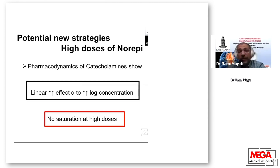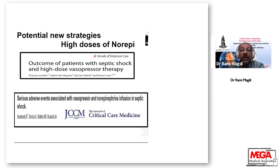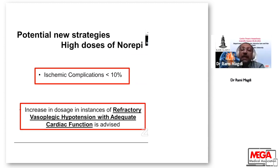Among potential new strategies, high-dose norepinephrine is based on catecholamine pharmacodynamics, which shows a linear effect directly proportional to the log concentration of norepinephrine, with no saturation at high doses. Two papers published in Critical Care Medicine and Annals of Intensive Care showed that combining norepinephrine and vasopressin resulted in ischemic complications of less than 10%, and that dose escalation is especially warranted in refractory vasopressia.